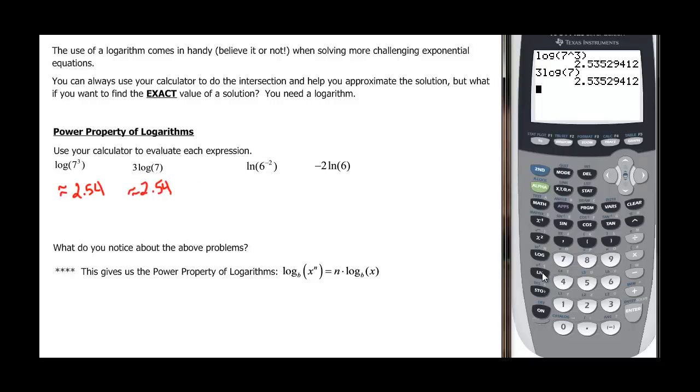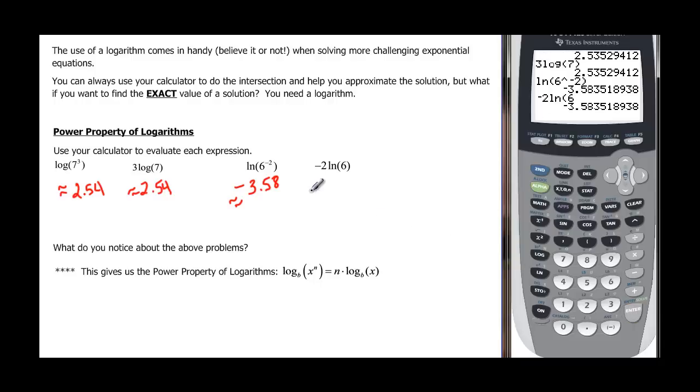Now let's look at this one. Natural log of 6 to the negative 2, close the parenthesis, and we find out that that is approximately negative 3.58. And if we do negative 2 and then ln 6, we get that same thing, negative 3.58.